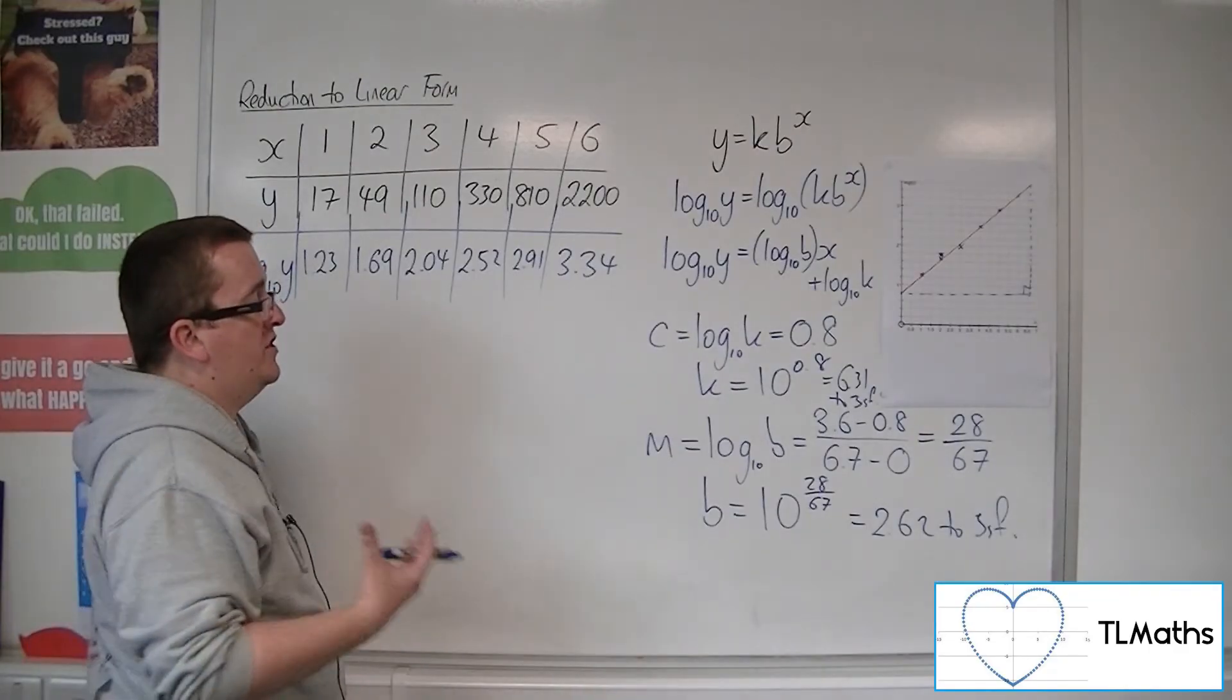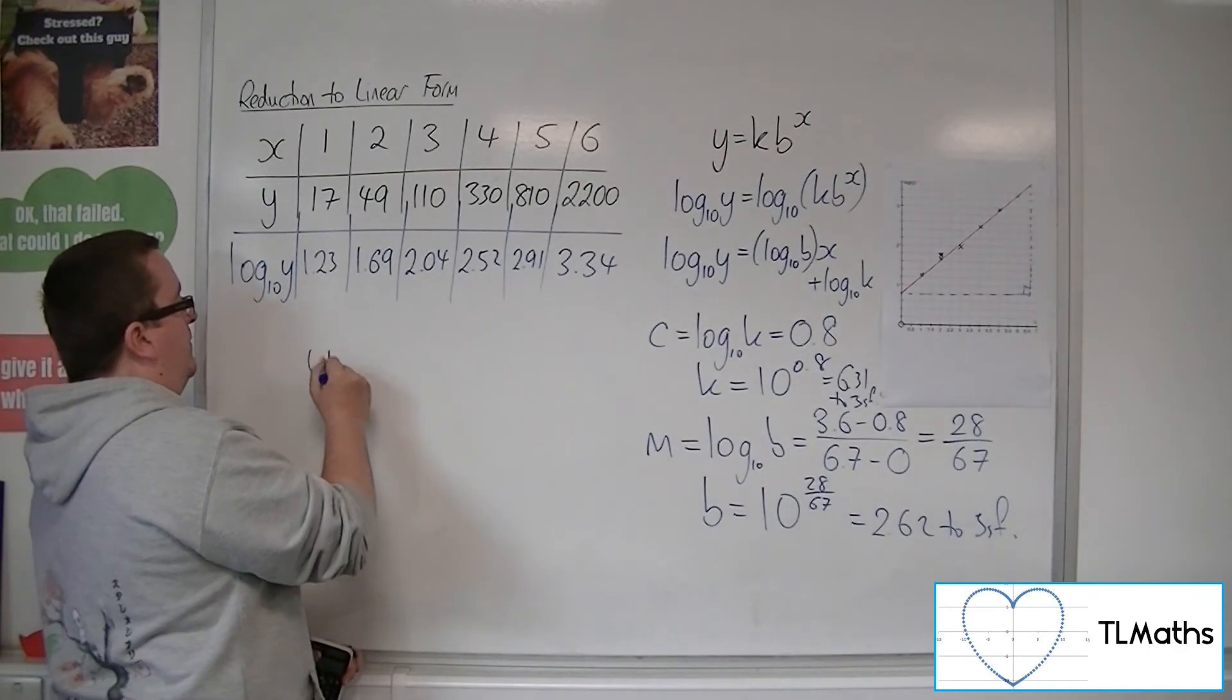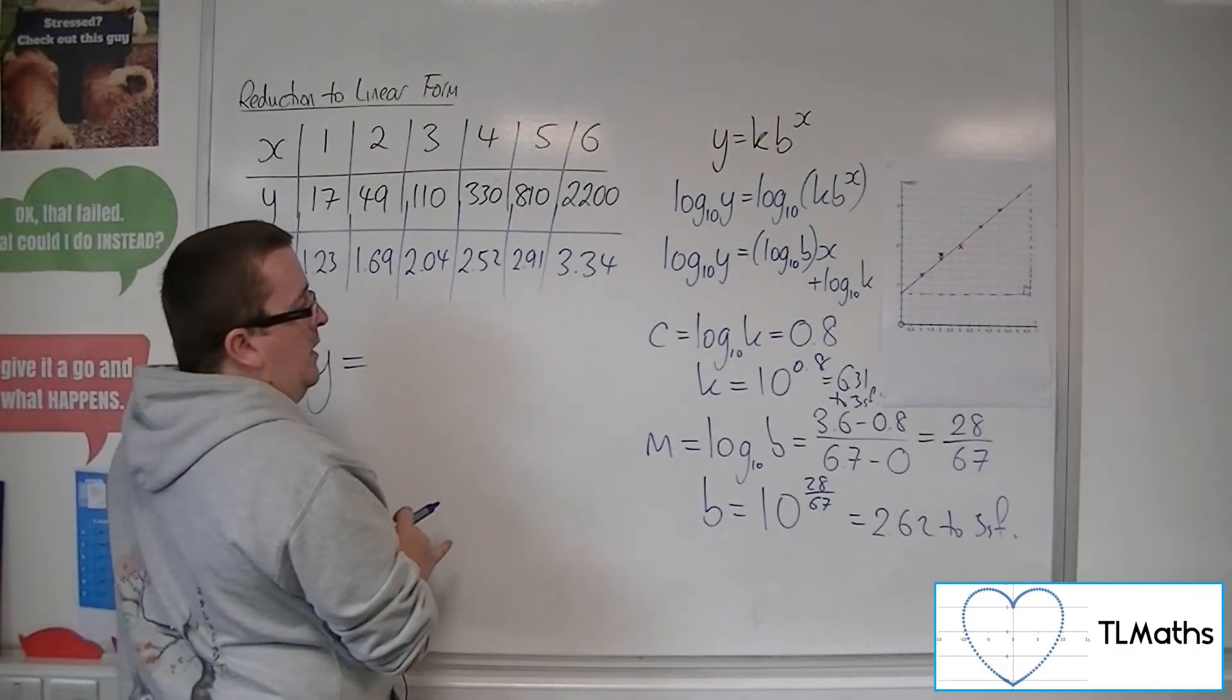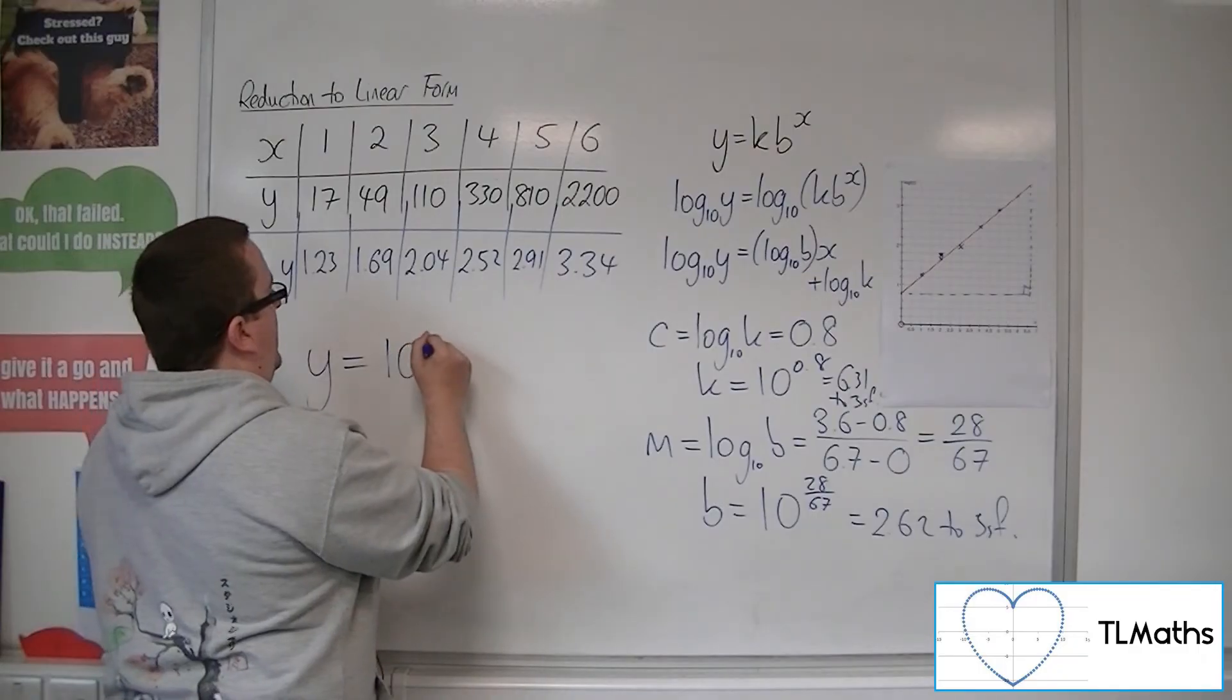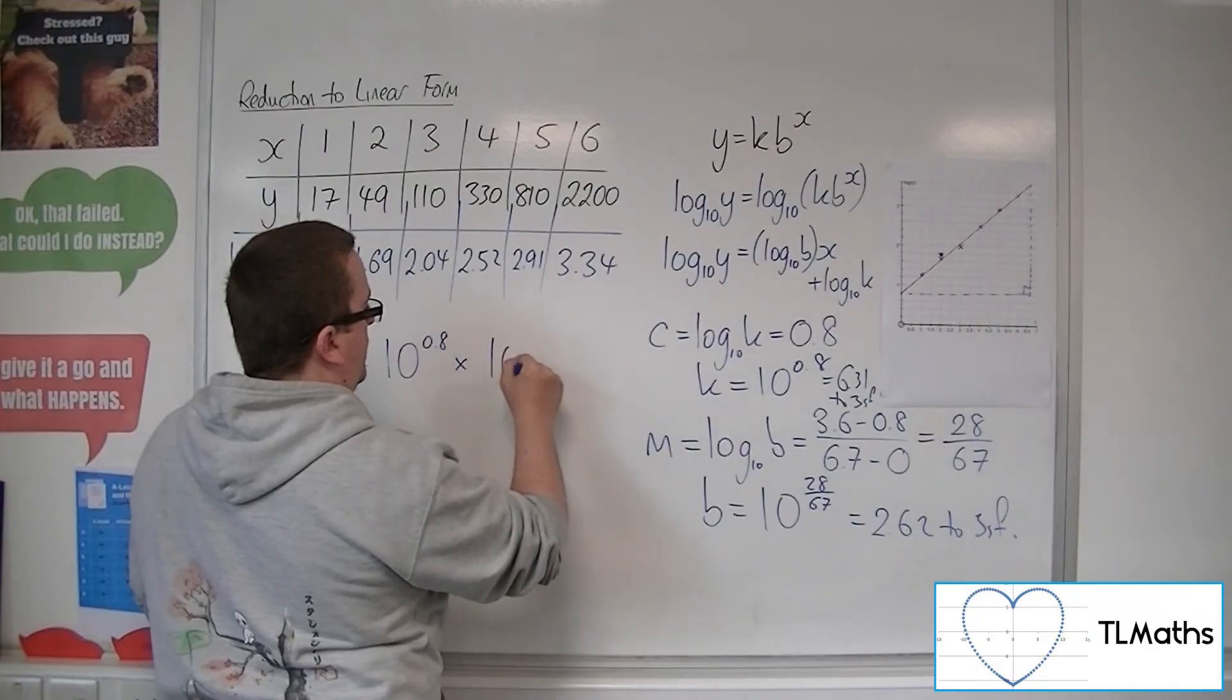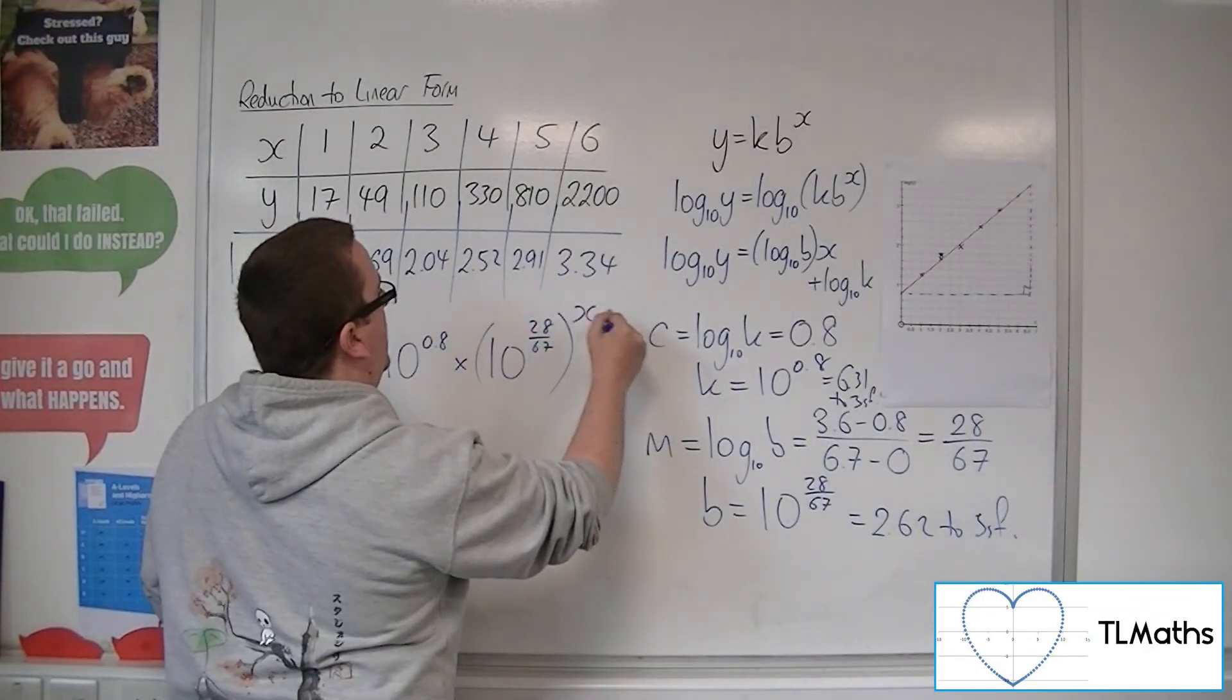So what you could then do is you could say that the original curve, because we've now found k and b, the curve that would fit the original data would be y equals 10 to the 0.8 times 10 to the 28 over 67 to the x.